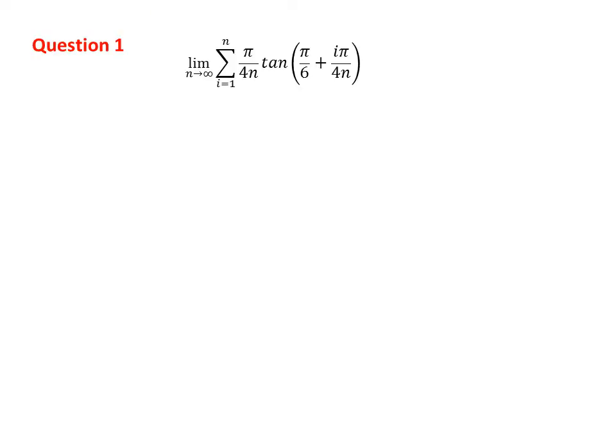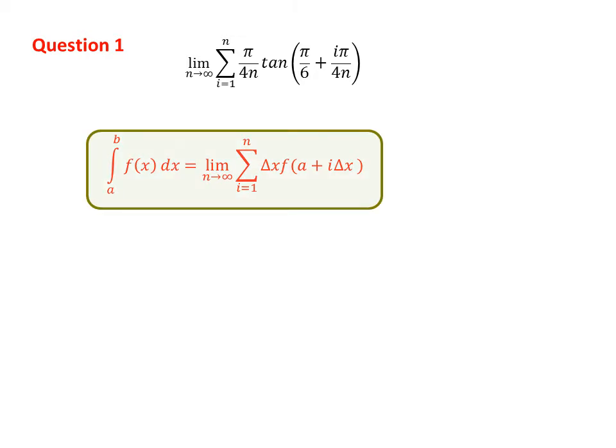So let us solve the first example. Here you can see the limit we have been given, and from here we will identify our definite integral. The first thing we catch is delta x. You can see it appears in two different places — one without an i index and one with an i index. We look for the same expression at both places. Clearly, we have pi over 4n appearing both with and without the i index, so delta x equals pi over 4n.